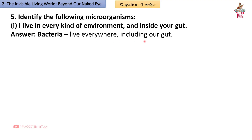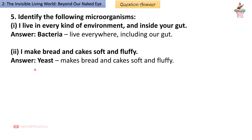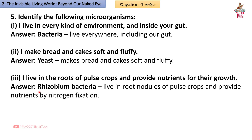Second — I make bread and cakes soft and fluffy. Answer: Yeast makes bread and cakes soft and fluffy. Third — I live in the roots of pulse crops and provide nutrients for their growth. Answer: Rhizobium bacteria live in root nodules of pulse crops and provide nutrients by nitrogen fixation.